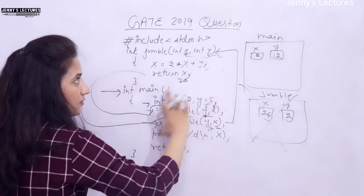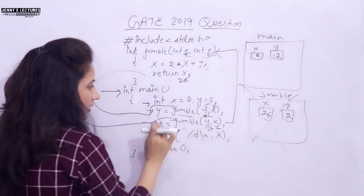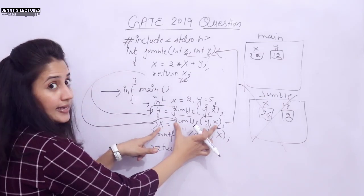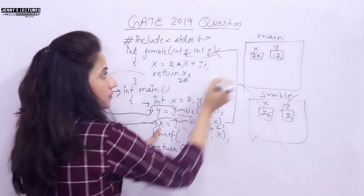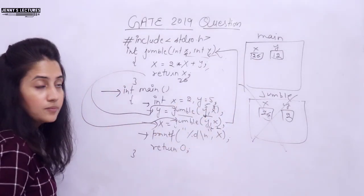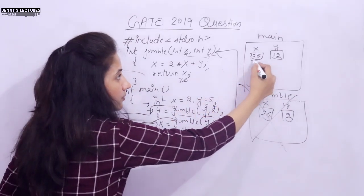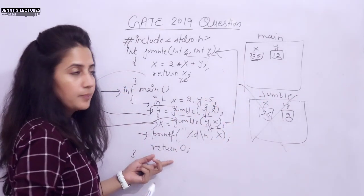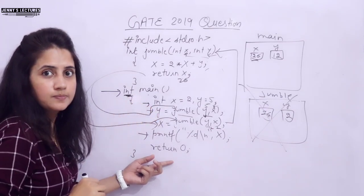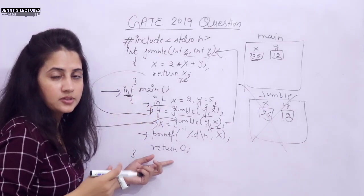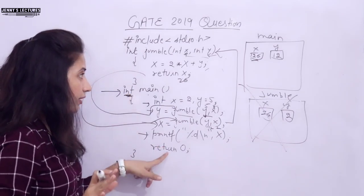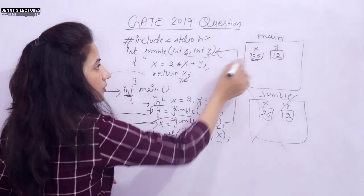Now we are in main function here, control is here. Now whatever this will return, it is returning 26. We are going to store that in x. So now x becomes 26. Next line is printf x. We are printing. x value is 26 and return 0. Because see, we are taking the return type of main is int. Int means it will return something, some integer value. Return 0, that's it. If you write down here void, no need to write down return statement. So now x value is 26.